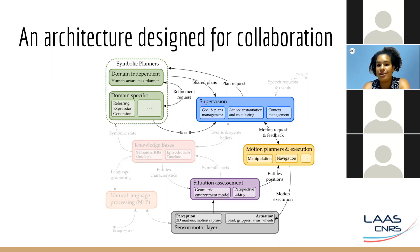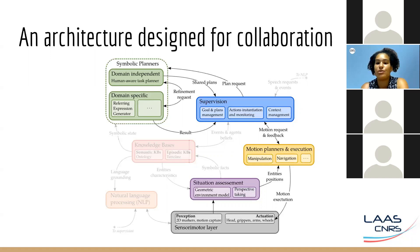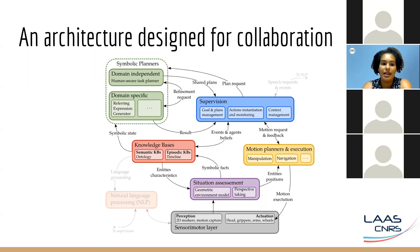The situation assessment component handles the geometric data from perception, integrating them into its geometric model of the environment created offline. It transforms the geometric data — for example, the mug has coordinates x=0, y=1, z=1, and the table has other coordinates — and from these coordinates it computes symbolic data, such as 'the mug is on the table.' It also computes the human's perspective, generating, for example, 'the human is able to see the blue mug.' Geometric data are sent to the motion planners, and symbolic facts feed the knowledge bases.